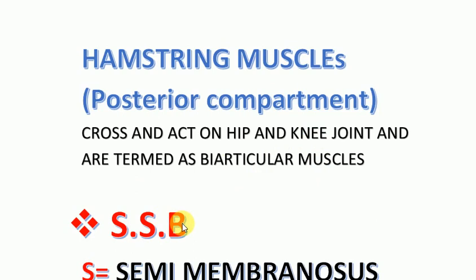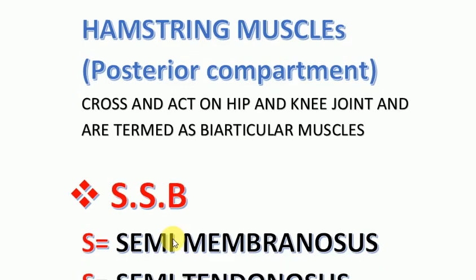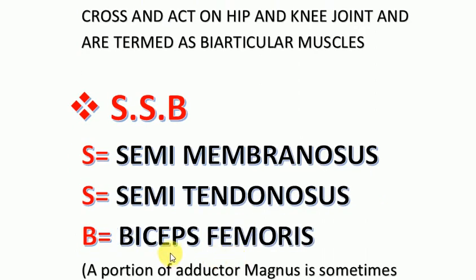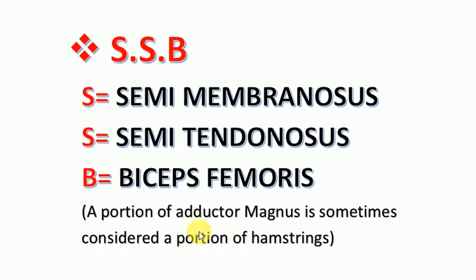To memorize the names of the hamstring muscles, the mnemonic is SSB: S for semimembranosus, S for semitendinosus, and B for biceps femoris. A portion of the adductor magnus is sometimes considered part of the hamstrings, but it is not a true hamstring.